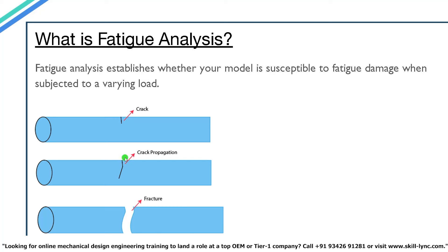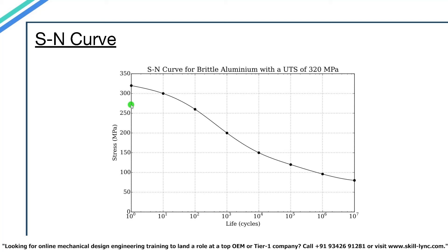To figure out whether a component will fail under fatigue, we subject the model to a large number of constant amplitude cyclic loads and count the number of cycles at which fracture occurs. The test is repeated with different applied stress values, and we plot the results into a graph called the SN curve.